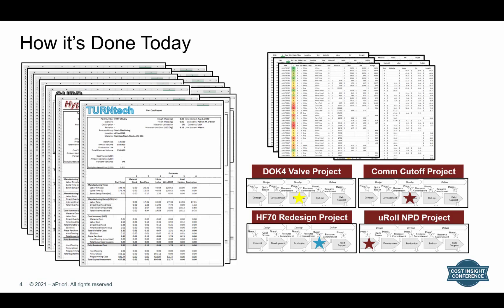So, how it's done today. When a sourcing individual needs to identify a part for relocation, or where some components are being overspent on, a tremendous amount of part detail may exist — but generally speaking, it's in individual Excel or PDF formats, or even hard copies. How can an individual be expected to scan through hundreds, if not thousands, of documents to help make that decision?